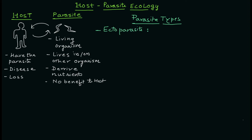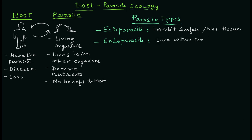Now let's discuss parasite types. The first is the ectoparasite — 'ecto' means on the surface, not penetrated to the tissue level. It inhabits the surface, not the tissues. An example is fleas. The second type is the endoparasite — a parasite that lives inside the body and penetrates to the tissue level. Examples include Leishmania and Plasmodium.